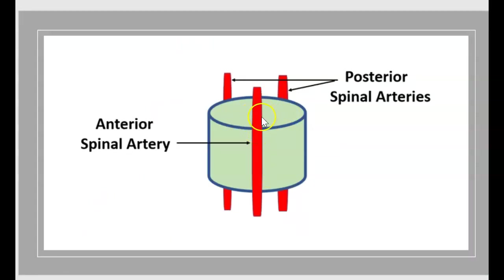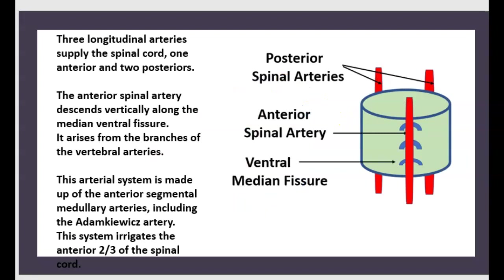There are three main arteries in the spinal cord: one anterior spinal artery and two posterior spinal arteries — three longitudinal arteries supply the spinal cord. The anterior spinal artery descends vertically along the median fissure and arises from a branch of the vertebral artery.